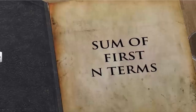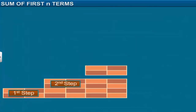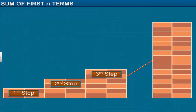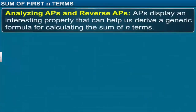In this module, you will learn how to calculate the sum of the first N terms in an arithmetic progression. A mason is laying bricks for a narrow staircase. For every step, he needs to add four bricks to the previous step, and the staircase requires 25 steps. To determine the total number of bricks, we need to find the sum of an AP with first term 4 and common difference 4.